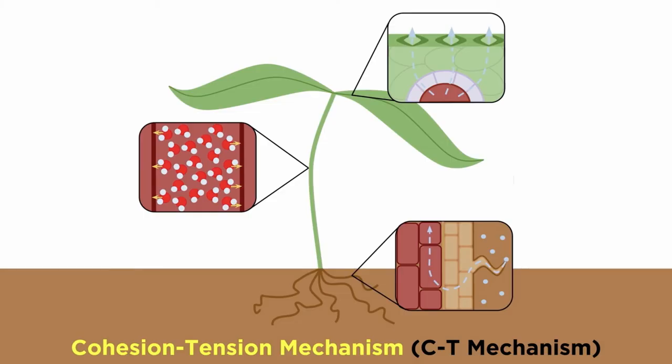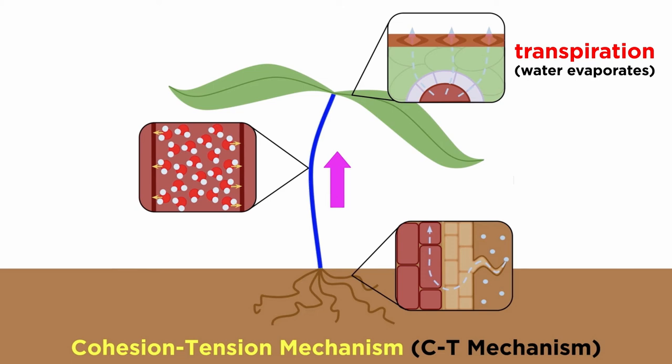The theory for how water moves through plants is called the cohesion-tension theory. Let's start with the process of transpiration — the technical term for the evaporation of water from plants. As water evaporates through the stomata, or really any part of the plant exposed to air, it creates a negative pressure called tension in the leaves and tissues of the plant. The negative pressure exerts a pulling force on the water in the plant's tissues and draws the water upward, just like you draw water upward in the straw.